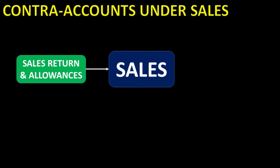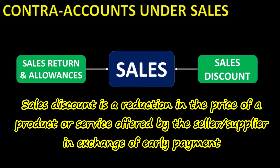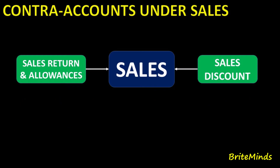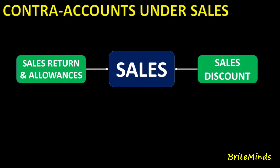Sales Returns and Allowances also represents a deduction to the original selling price when customers decide to accept defective products. Another contra account under sales is Sales Discount. Sales Discount is when the supplier gives discounts to their customers to encourage them to pay early. For example, the business delivers goods and records sales revenue based on the full selling price, then gives the buyer credit terms of 2/10, net 30 — meaning the buyer receives a 2% discount if the credit is paid within 10 days.